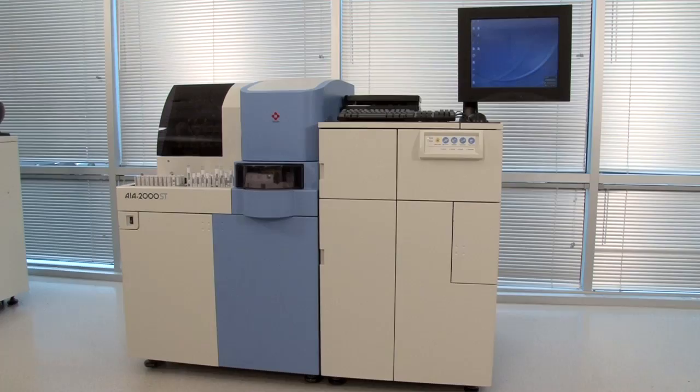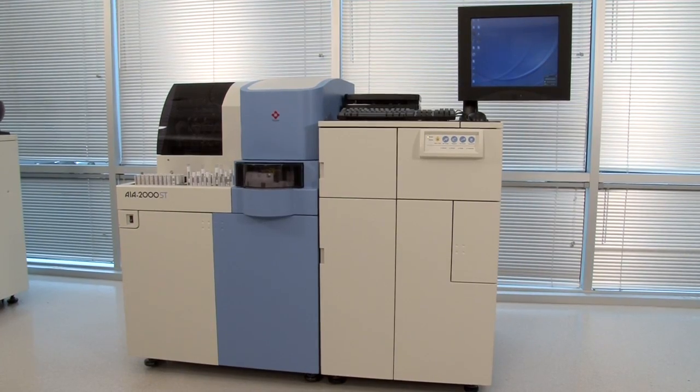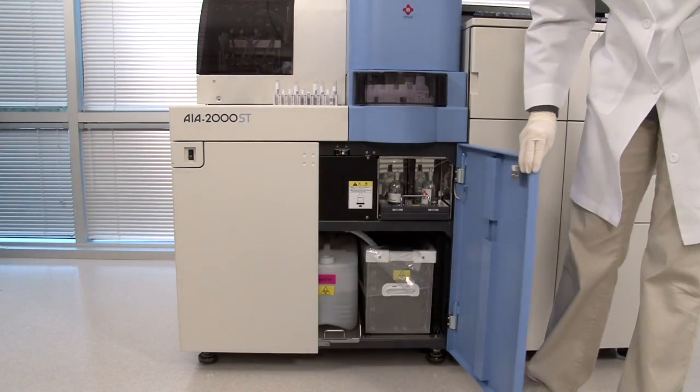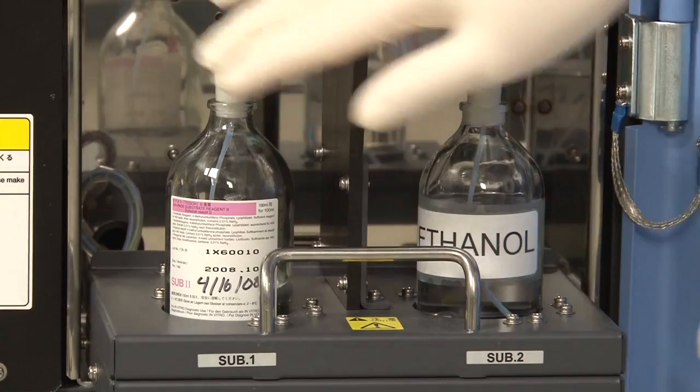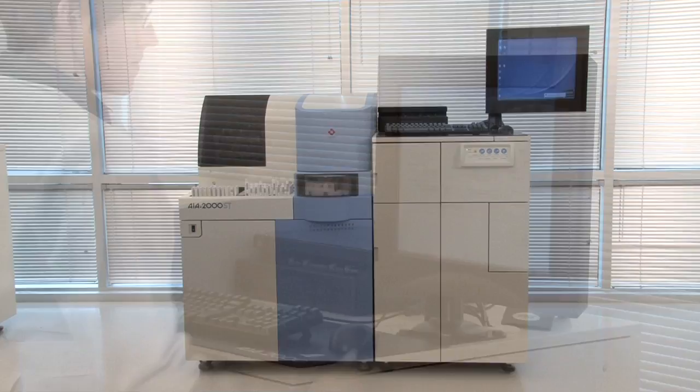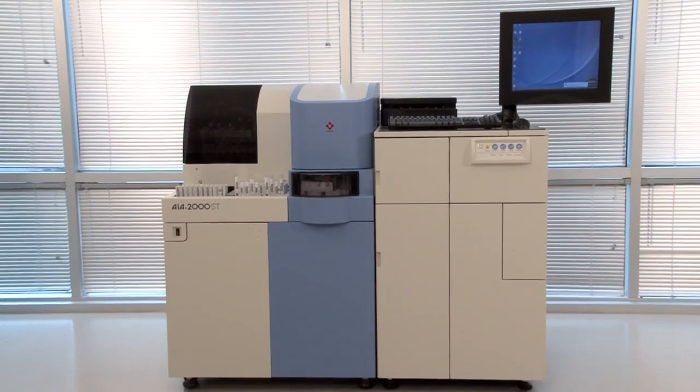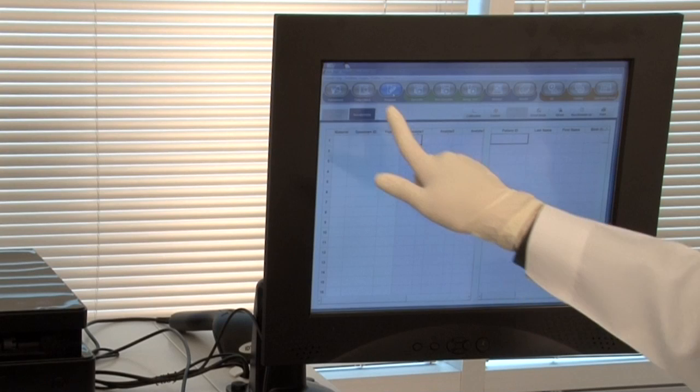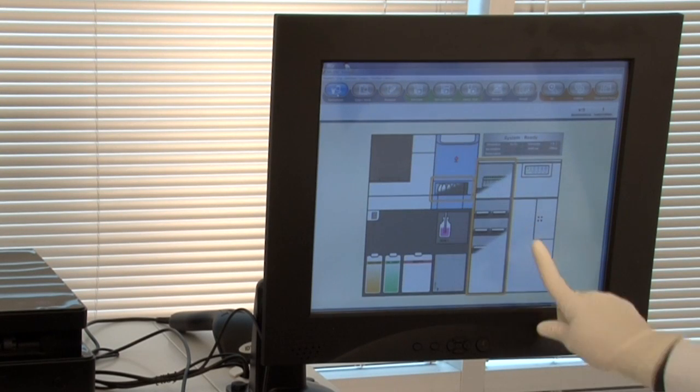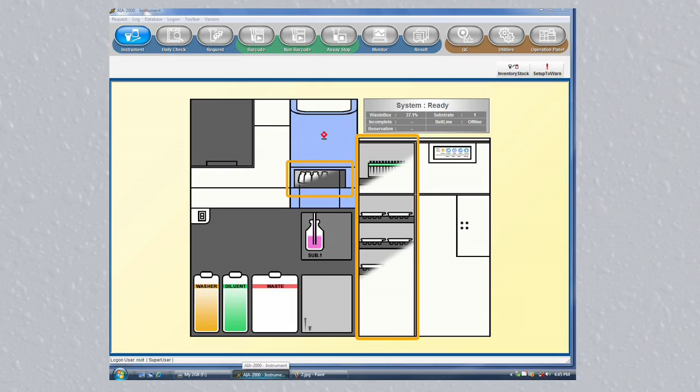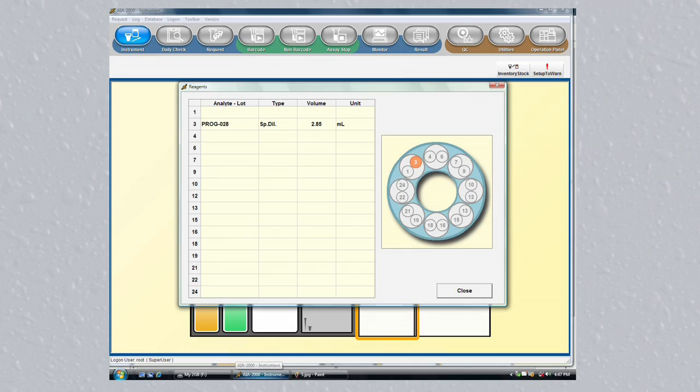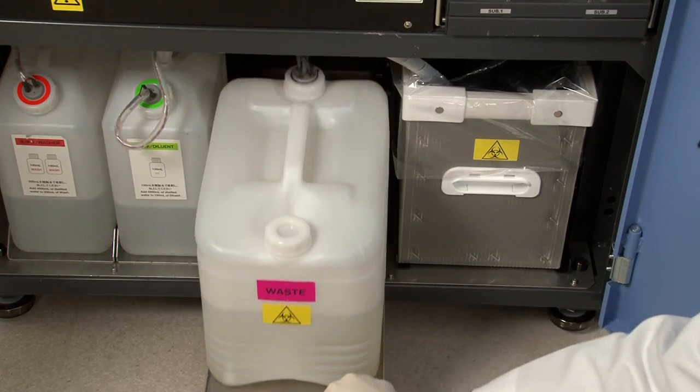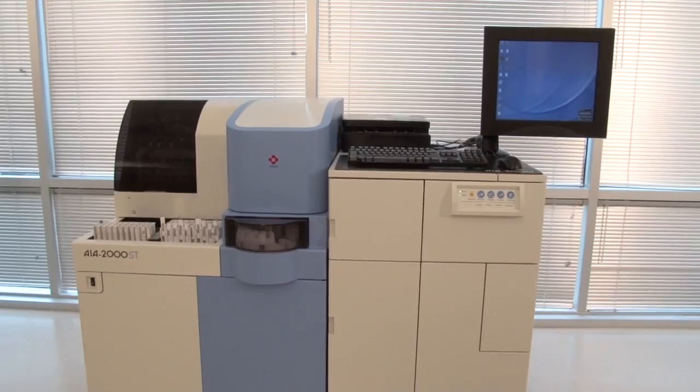The AIA-2000 operation is very simple and intuitive. The system is easy to set up and operate and requires no special electrical or plumbing needs. At startup, the operator runs the daily system check. A series of maintenance and checks are performed automatically. The inventory management screen indicates fluid levels, reagent supply and consumable stock, and waste volumes. This enables the operator to check at a glance which items need to be replenished or emptied. In just a few minutes, the system is ready to run samples.